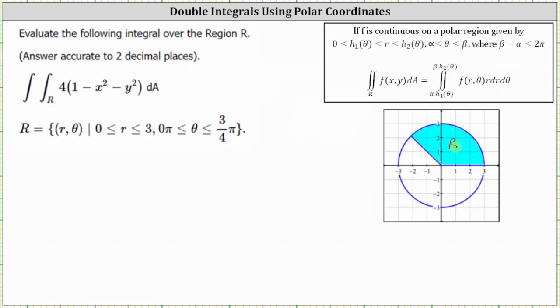So because the region is given using polar coordinates, we will convert the given double integral to polar form, which means we need to write four times the quantity one minus x squared minus y squared as a function of R and theta, and differential A is equal to R dr d theta.